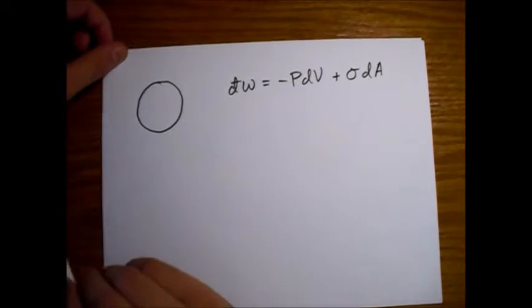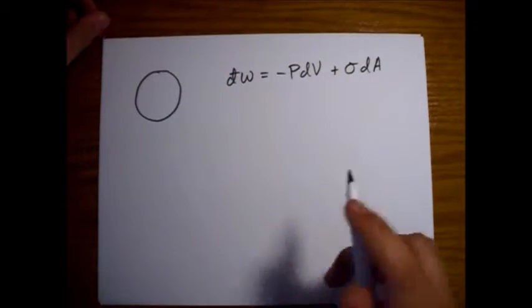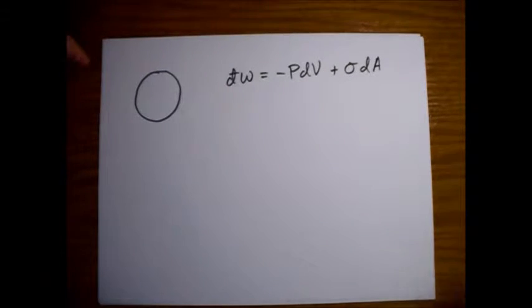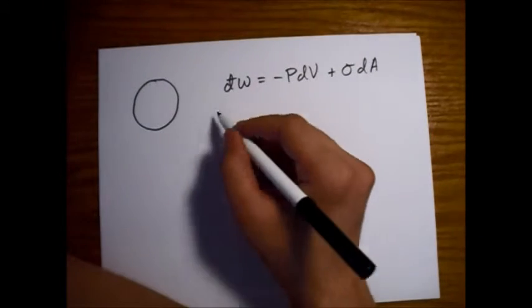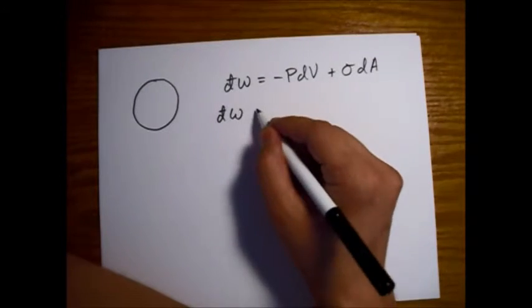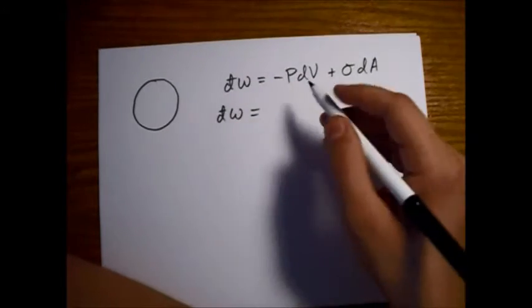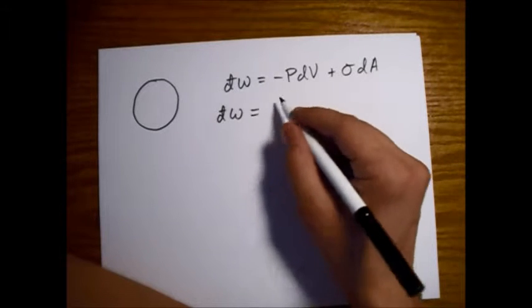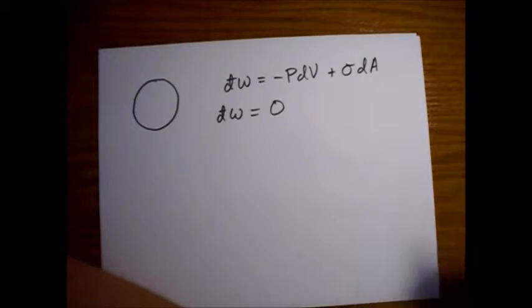For equilibrium, these two quantities will reach a point where they're going to balance. And this dw for our work is going to equal zero.